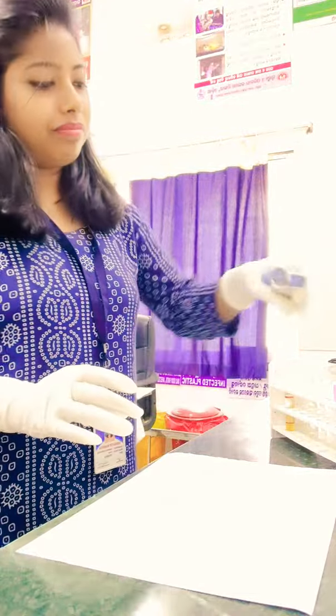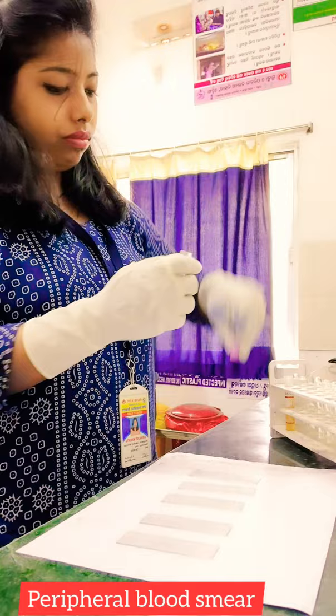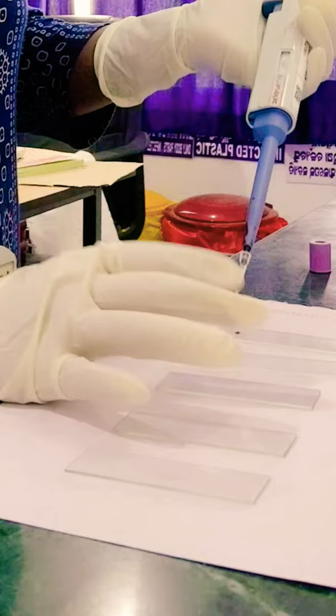Hello guys, today we'll see how to prepare a DC slide differential count slide where we can see neutrophils, eosinophils, and basophils. I am taking this whole blood from an EDTA vial which contains EDTA as the anticoagulant and putting one drop of blood on the slide.